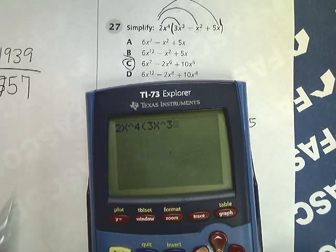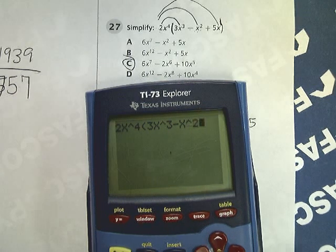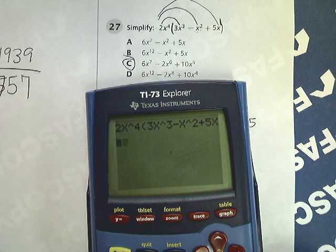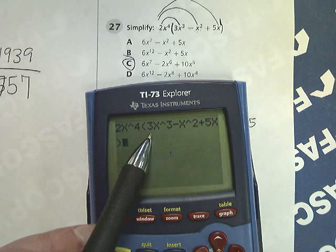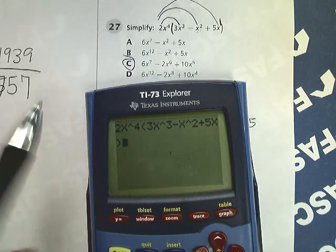You have an X button. If you're not using a TI-73, you probably have something that says it's your button for graphing. Whatever your variable button happens to be. 3x to the 3rd minus x squared plus 5x. And close that parenthesis. Hit enter.